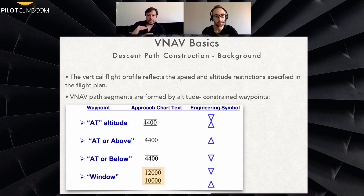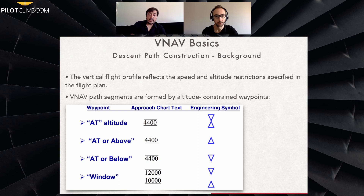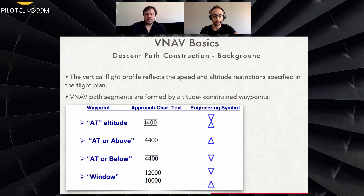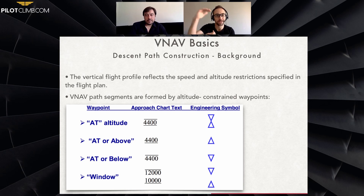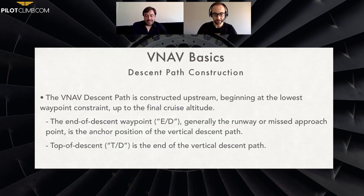The 'window' constraint is when you have two different altitudes and you have to be between them — you'll see two numbers, for example 12,000 and 10,000 feet, with one line above and one below, and the same triangles but with space between them. It's like having a floor and a roof — at 4,500 you have to be exactly there, like being in a house.